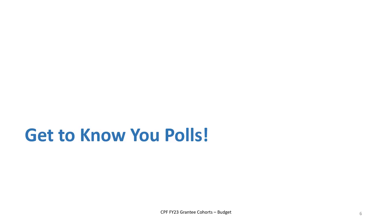Question number two: have you received federal funds in the past? This will help us understand if folks are familiar with complying with federal requirements. The results show about 71% of folks have received federal funds in the past, which gives a foundational understanding of what HUD is going to be looking for in terms of compliance. We do have about a third of folks who have not received federal funds in the past, so that's helpful to understand.